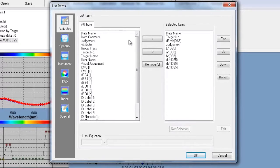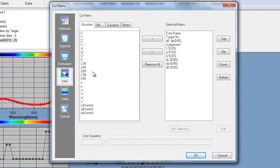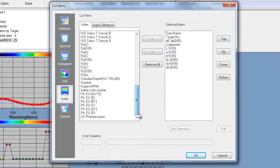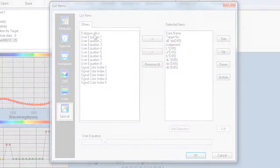With SpectraMagic NX, you can measure samples in any of eight universally accepted color spaces. Select from 16 illuminants and up to 40 indices to determine specific color and appearance properties such as strength, brightness, haze, yellowness, opacity, and whiteness. You can even configure up to eight customized color equations.